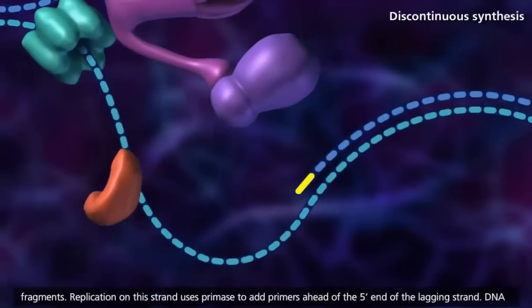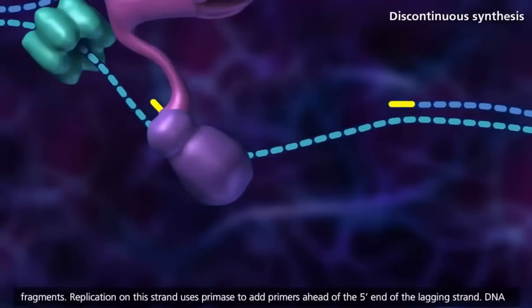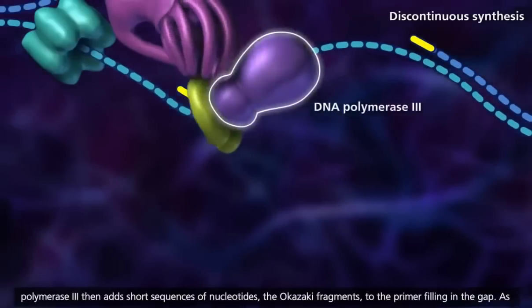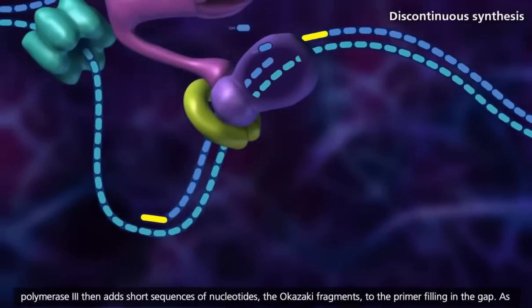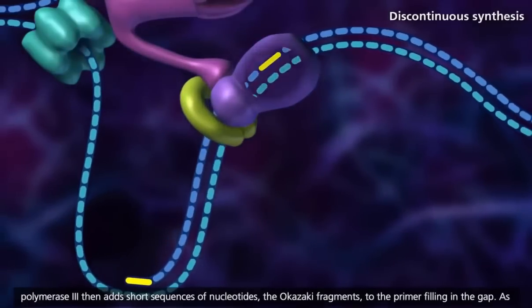Replication on this strand uses primase to add primers ahead of the 5' end of the lagging strand. DNA polymerase 3 then adds short sequences of nucleotides, the Okazaki fragments, to the primer filling in the gap.